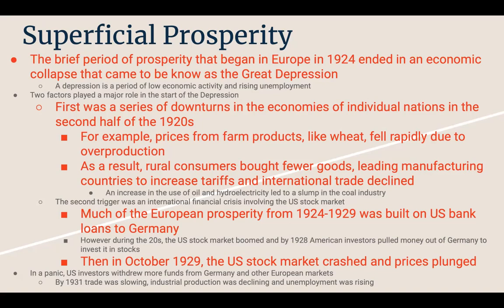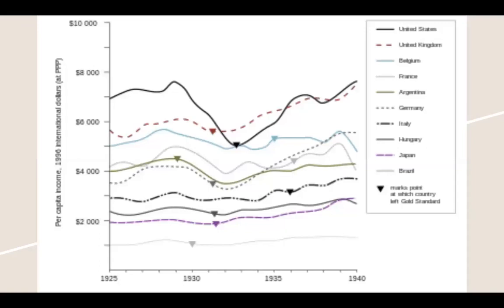The second trigger was an international financial crisis involving the US stock market. Much of European prosperity from 1924 to 1929 was built on US loans to Germany. During the 1920s the US stock market boomed, and in 1928 American investors pulled money out of Germany to invest in stocks. On October 29, 1929, the US stock market crashed and prices plunged. In a panic, US investors withdrew more funds from Germany and other European markets. By 1931 trade was slowing, industrial production was declining, and unemployment was rising.